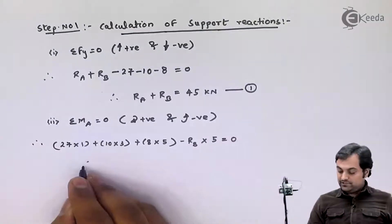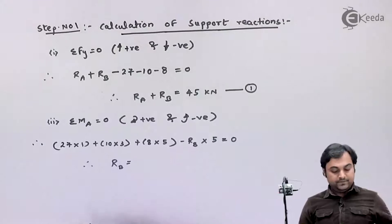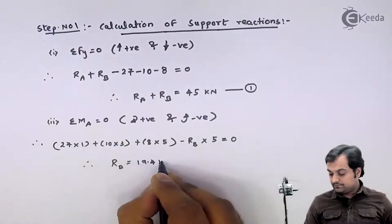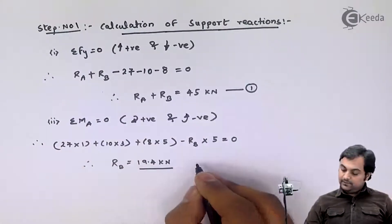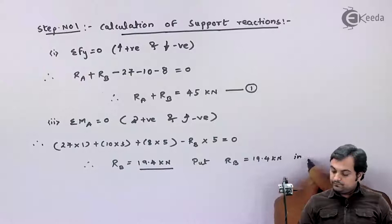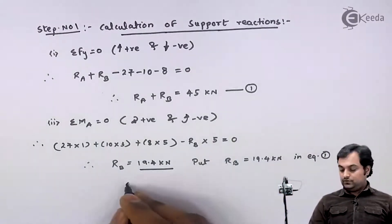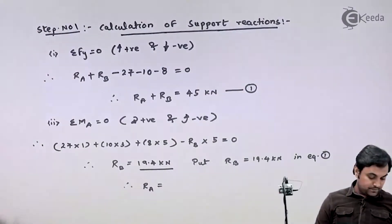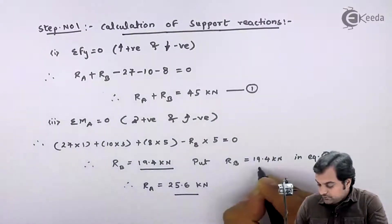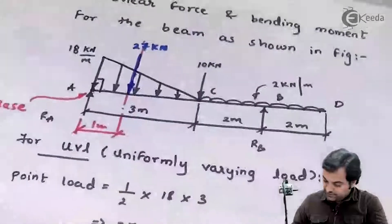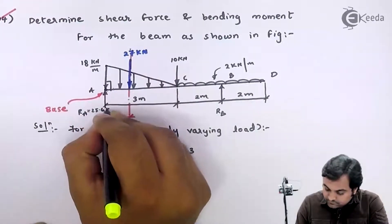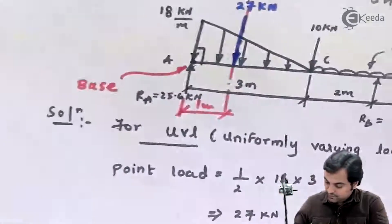Solving that moment equation gives RB = 19.4 kilonewton. Substituting RB = 19.4 kilonewton into equation number one gives RA = 25.6 kilonewton. So the support reactions are RA = 25.6 kilonewton and RB = 19.4 kilonewton. Step one is now complete.